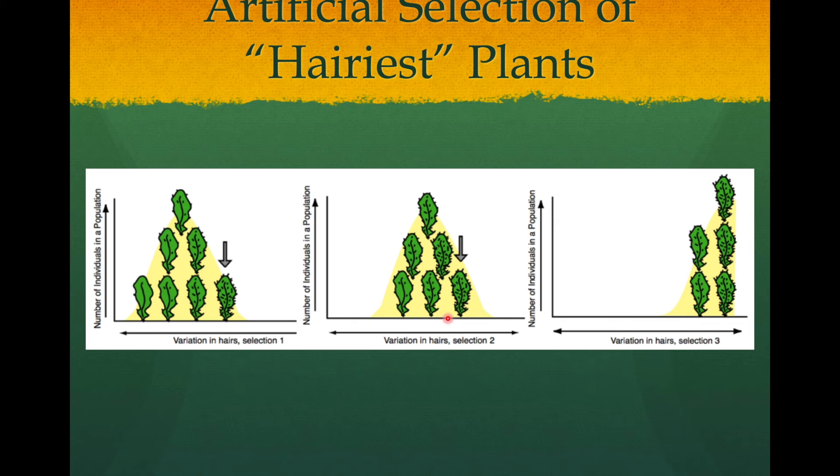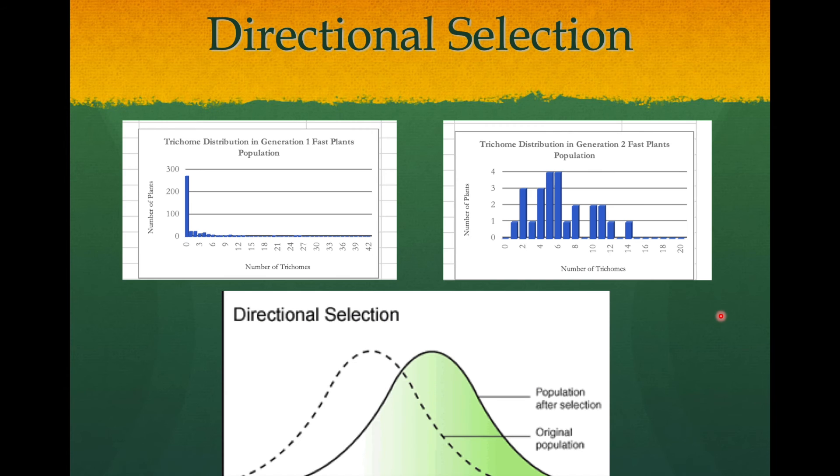You can already see that the distribution of this particular phenotype has already shifted a little bit to the right. And if we were to select again for the hairiest plants, the distribution for that third generation would skew a lot more heavily towards the right.